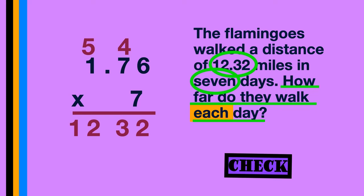In order to place it correctly, we must identify the amount of places behind the decimal point in the factors given to us. There are only 2 digits behind the decimal point in our factors, so that means in my product, there must be only 2 digits behind my decimal point. So that means that the answer 1 and 76 hundredths is correct. They walk that amount of miles each day. Do you think you're ready to try one on your own already?